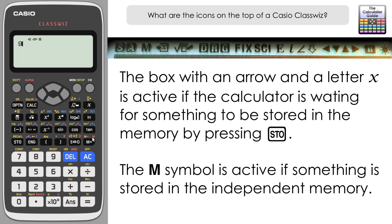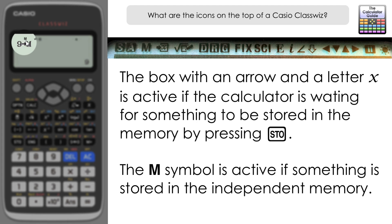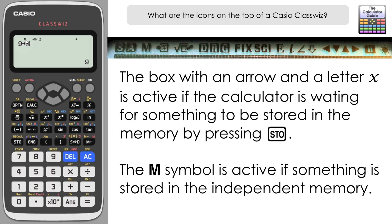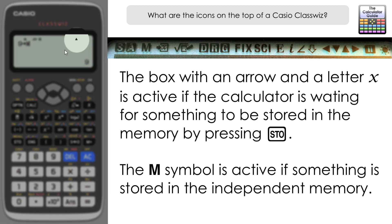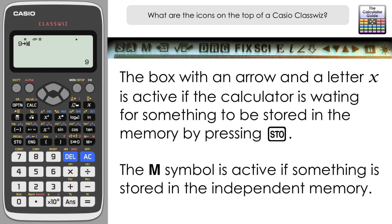I'm going to store it in M, which is the independent memory. Pressing M activates the M icon at the top of the ClassWiz, confirming that something is stored in the independent memory. This has also activated a little black arrow here, which I will explain shortly.